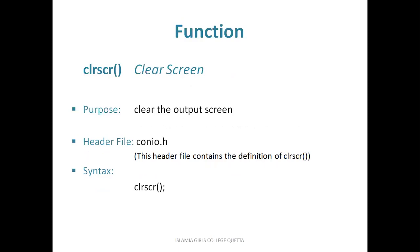The third function is clrscr — clear screen. Its purpose is very simple: to clear the output screen. If there is any output present before your program is executed, it will clear that output from the screen. It is present in the conio.h header file, so if you are using the clrscr function, you have to include that header file. Its syntax is very simple — you just write clrscr with opening and closing round brackets and then a semicolon.